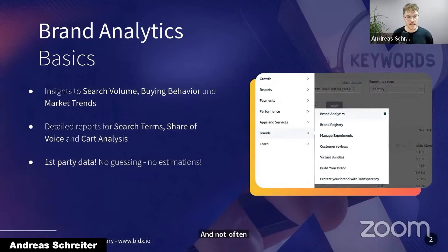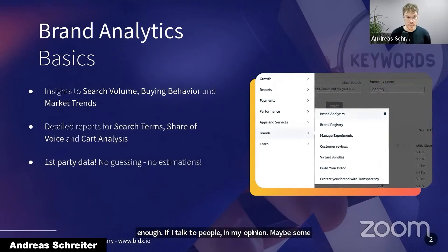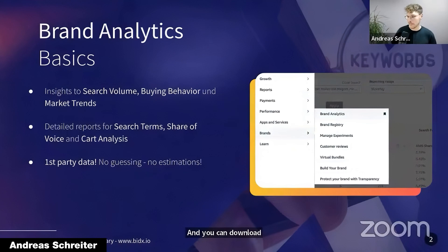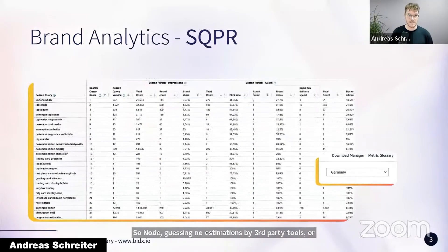Some basics to begin with: with Brand Analytics, you get insights into search volume, buying behavior, and market trends within Seller Central or Vendor Central. You can download detailed reports for search terms, share of voice, and cart analysis. And this is first-party data — no guessing, no estimations by third-party tools. This data is coming directly from Amazon.